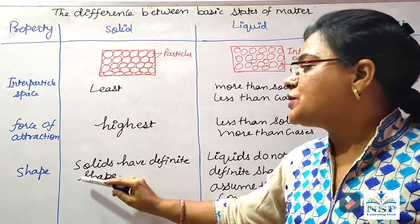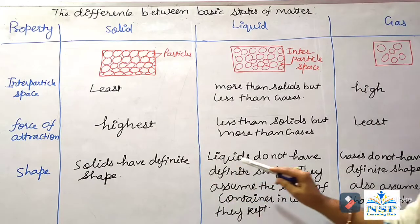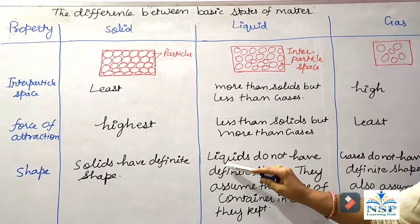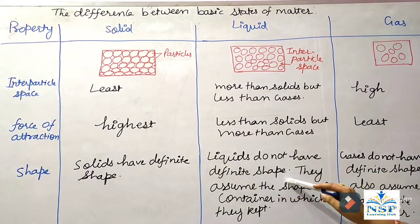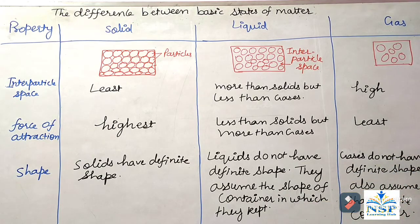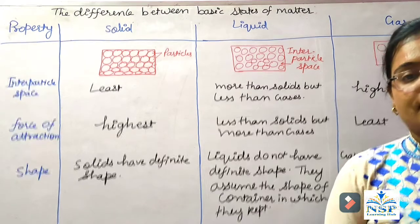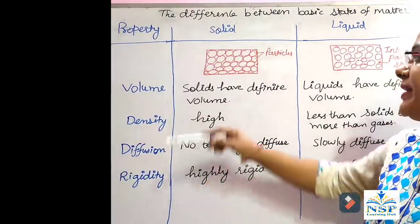Shape. Solids have definite shape. Liquids do not have definite shape — they assume the shape of the container in which they are kept. Gases also do not have definite shape; they also assume the shape of the container because of the kinetic energy of the particles.